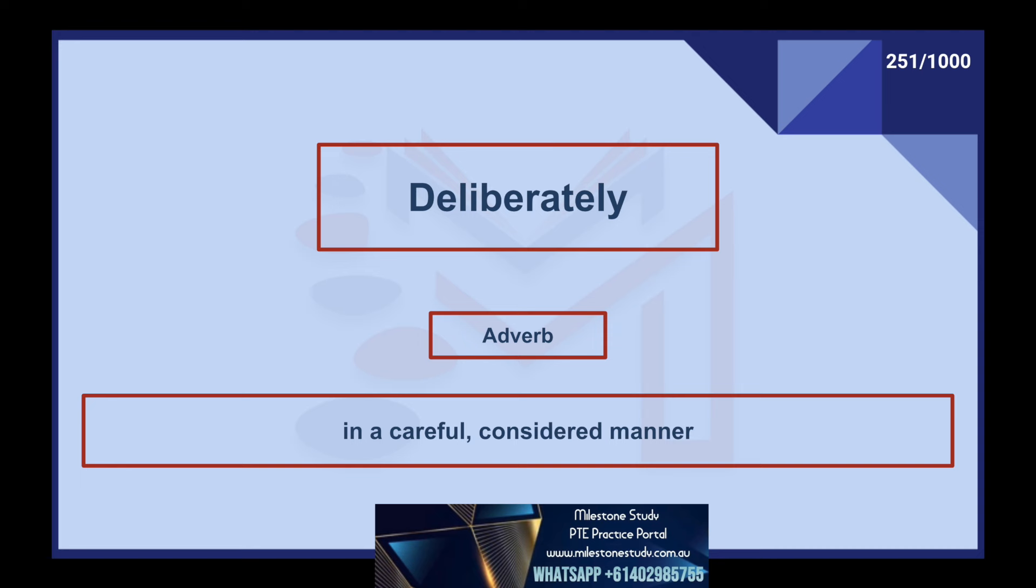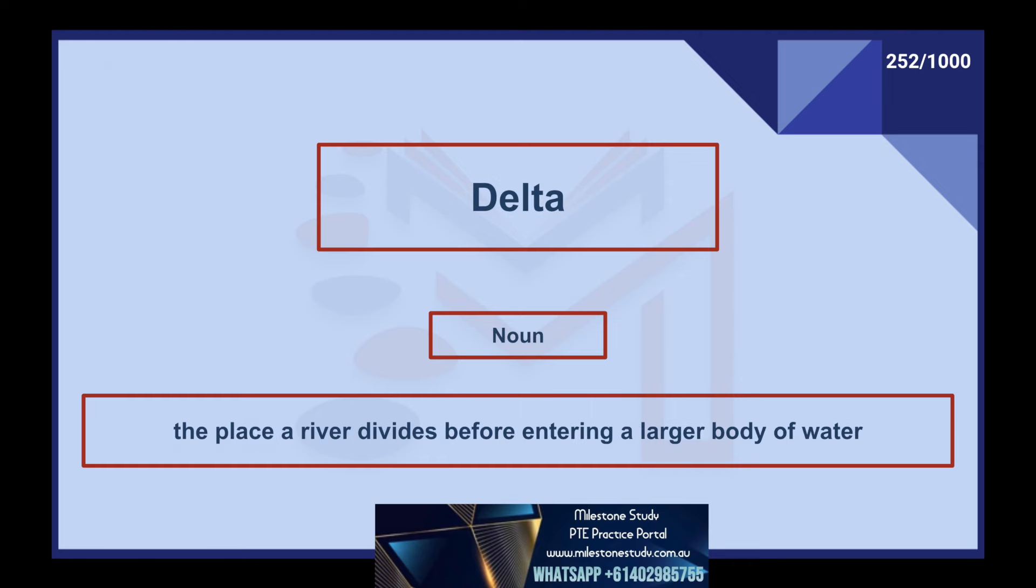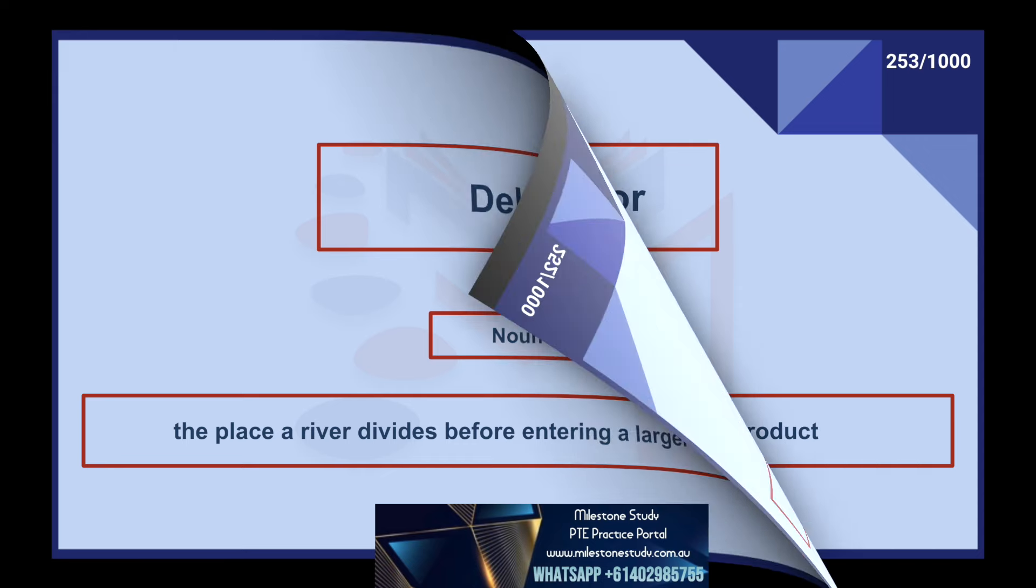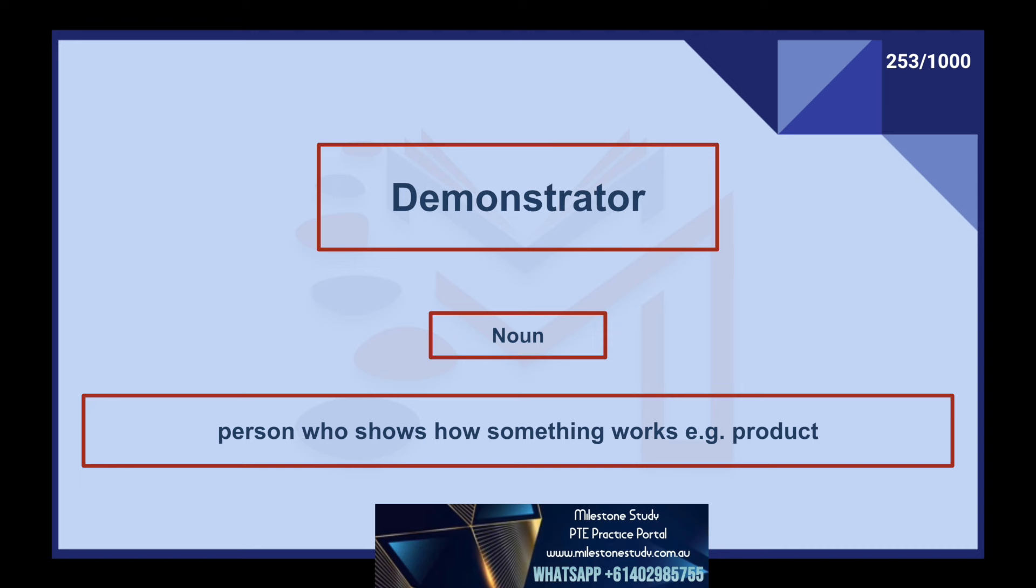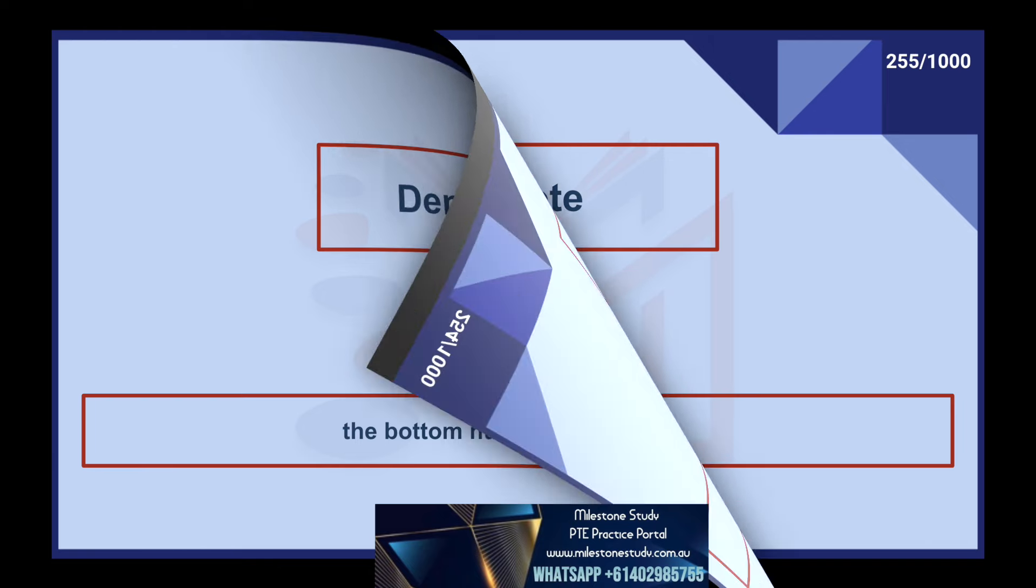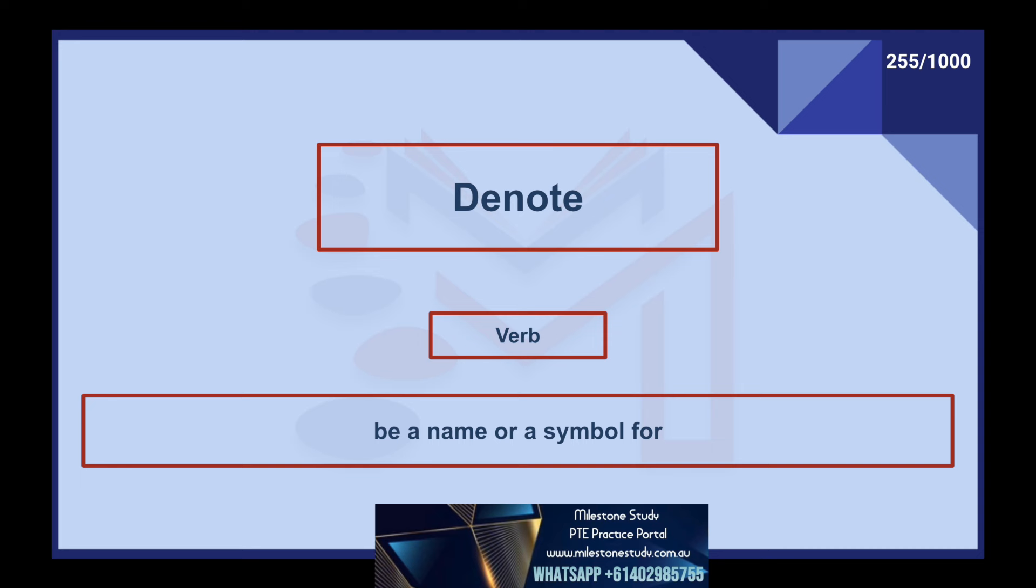Deliberately, adverb: in a careful, considered manner. Delta: the place a river divides before entering a larger body of water. Demonstrator, noun: person who shows how something works, e.g. product. Denominator, noun: the bottom number in a fraction. Denote, verb: be a name or a symbol for.